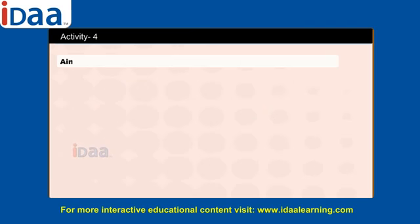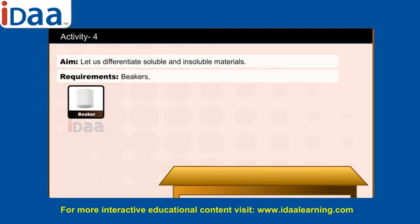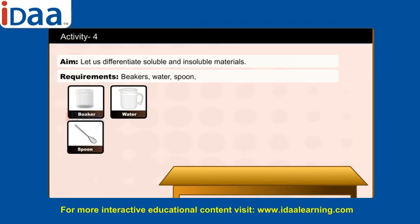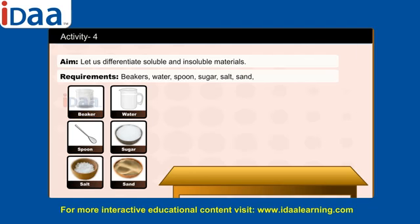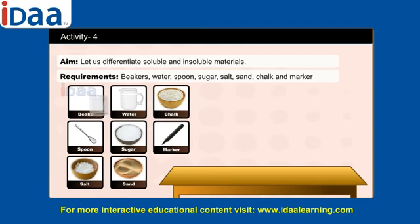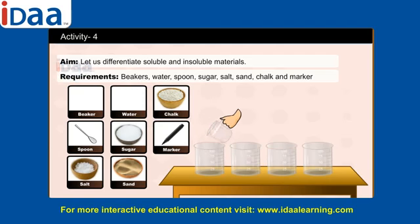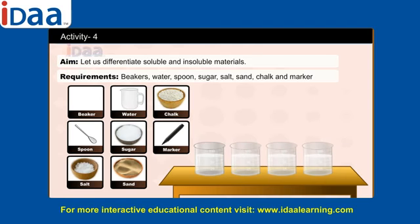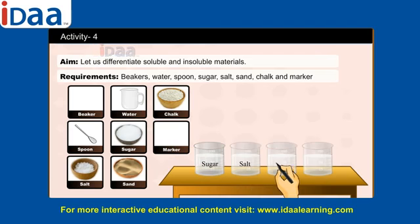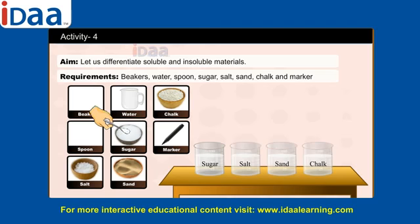Activity 4: Let us differentiate soluble and insoluble materials. Requirements: beakers, water, spoon, sugar, salt, sand, chalk, and a marker. Take 4 beakers each of capacity 100 ml. Fill three-fourths of the beakers with water. Mark the 1st beaker as sugar, 2nd as salt, 3rd as sand, and 4th as chalk powder. Take a tablespoon of each substance and add it to its corresponding beaker.